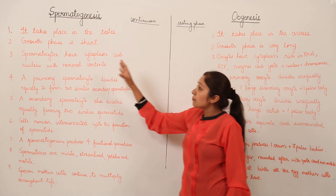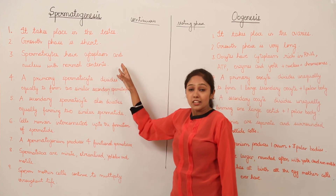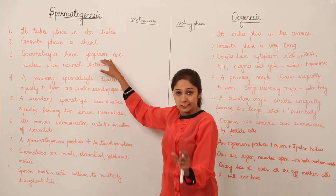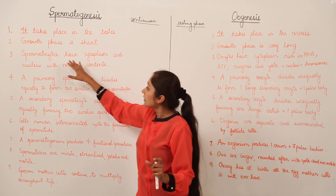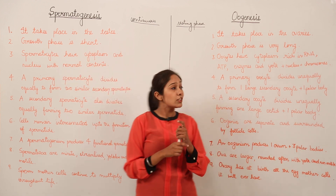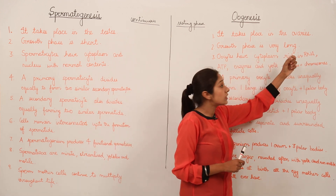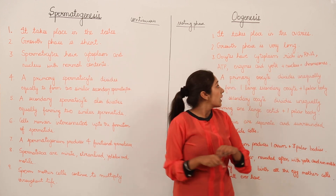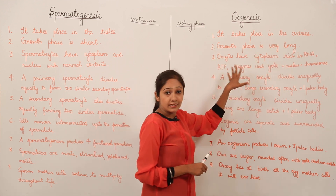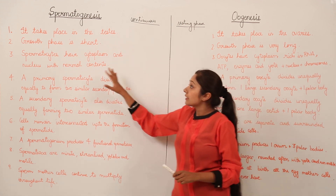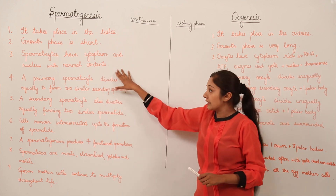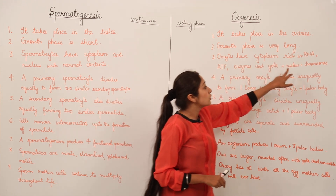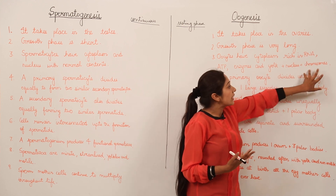In spermatogenesis, spermatocytes have cytoplasm and nucleus with normal contents. During sperm formation, the cytoplasm condenses and its volume reduces. But in the case of ova, oocytes have cytoplasm rich in RNA, ATP, enzymes, and yolk, plus a nucleus and chromosomes. So compared to spermatocytes, oocytes have much more content in the cell, including very large, giant chromosomes.